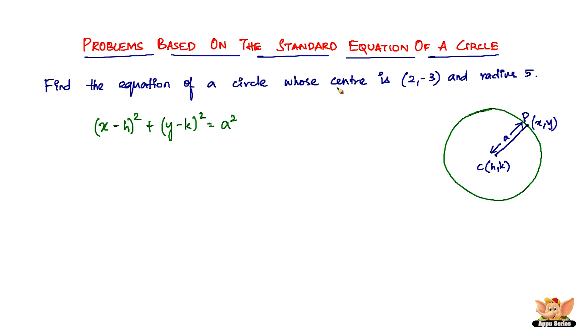And you need to know what is h, k. h, k is the center. The center is given by (2, -3). So 2 is h and -3 is k. So here we are: h = 2 and k = -3.